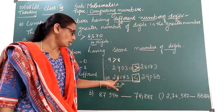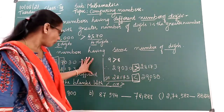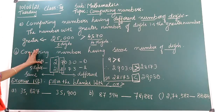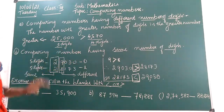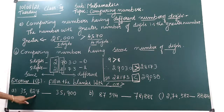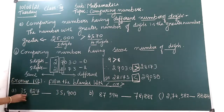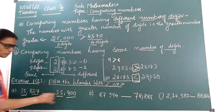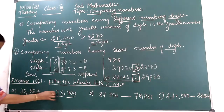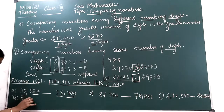This is how to compare when numbers have the same number of digits. Let's do a sum. First sum: 35,827 and 35,900. First, you have to check the digits — the digits are the same. Compare from the left. Both numbers are equal in the ten-thousands place.